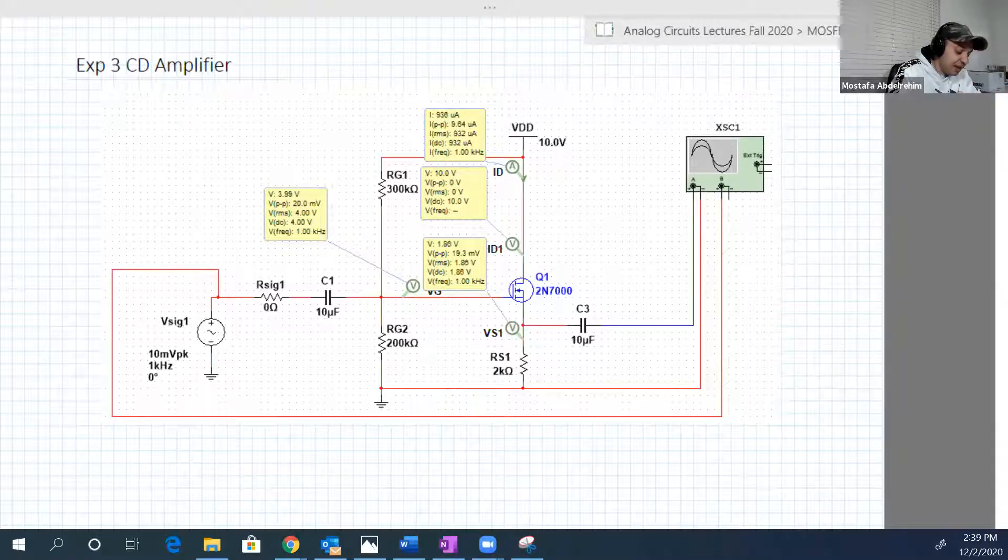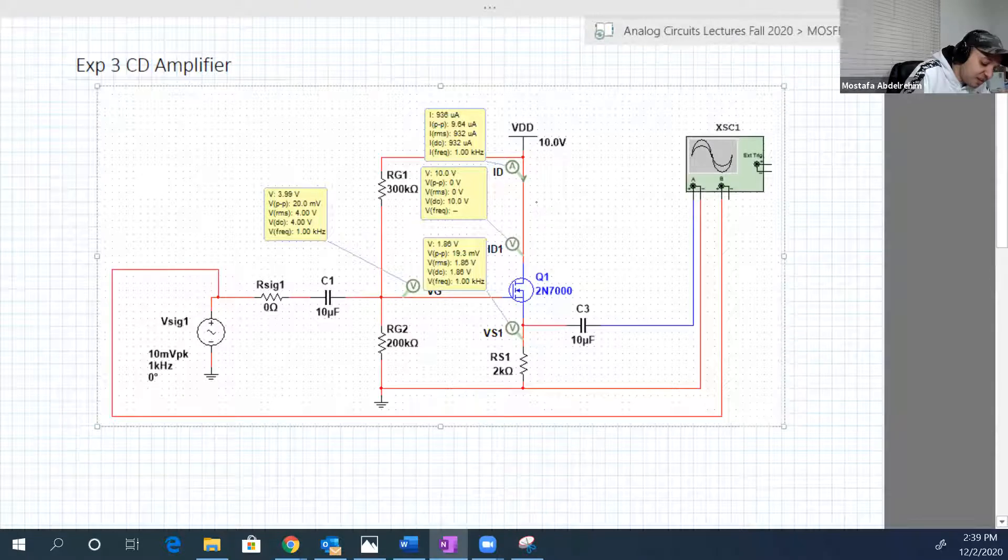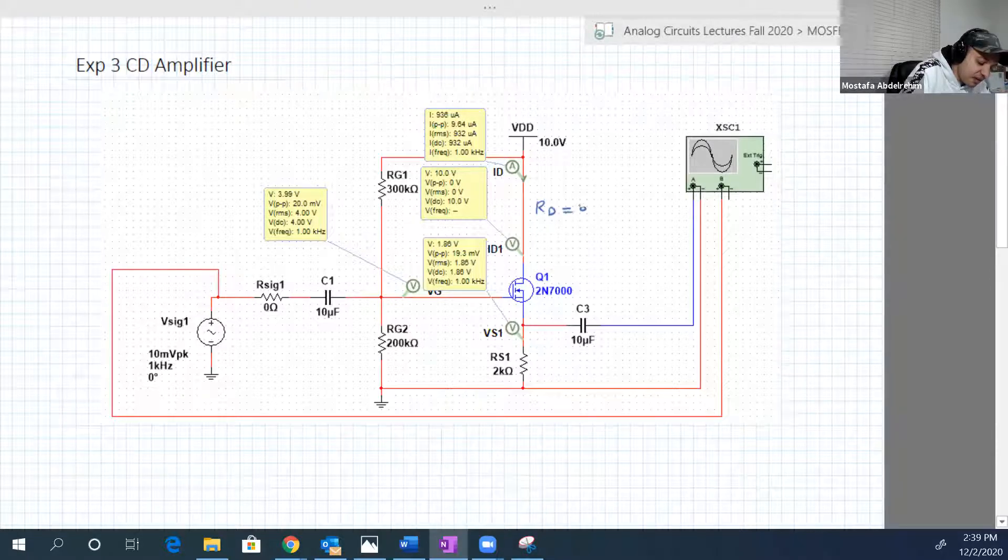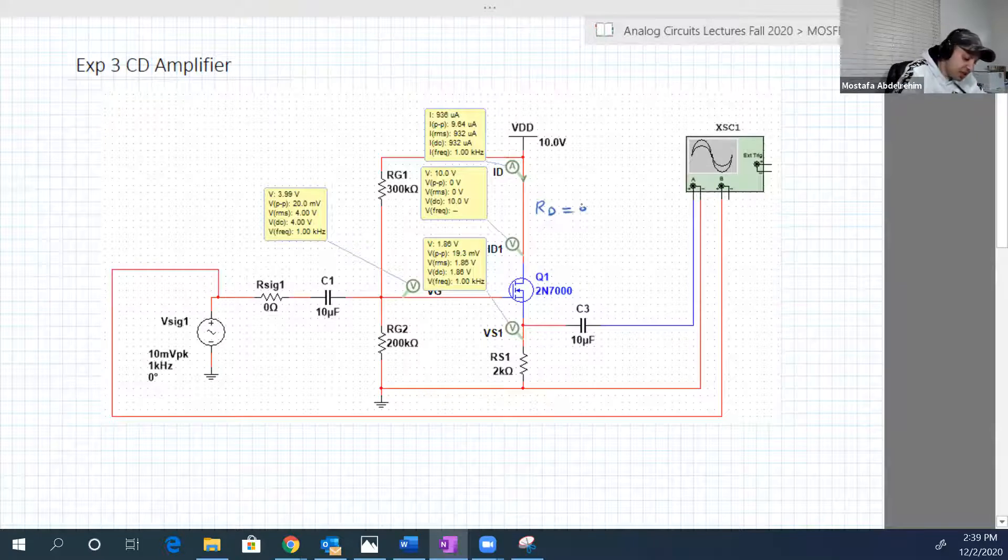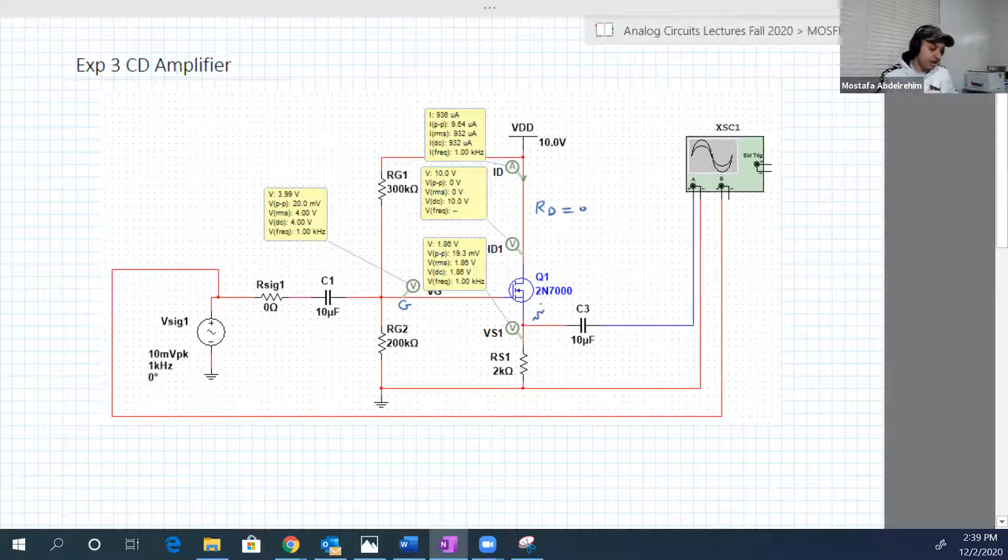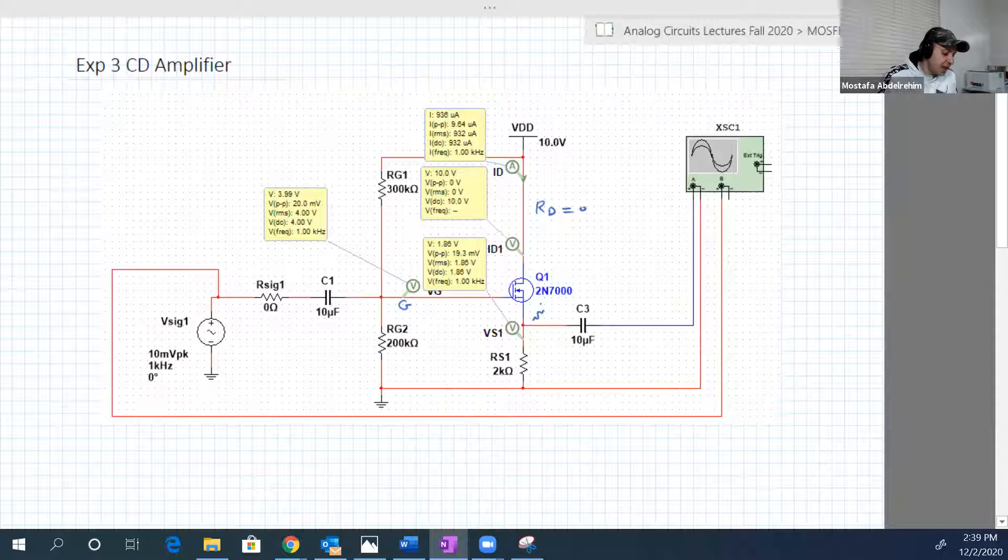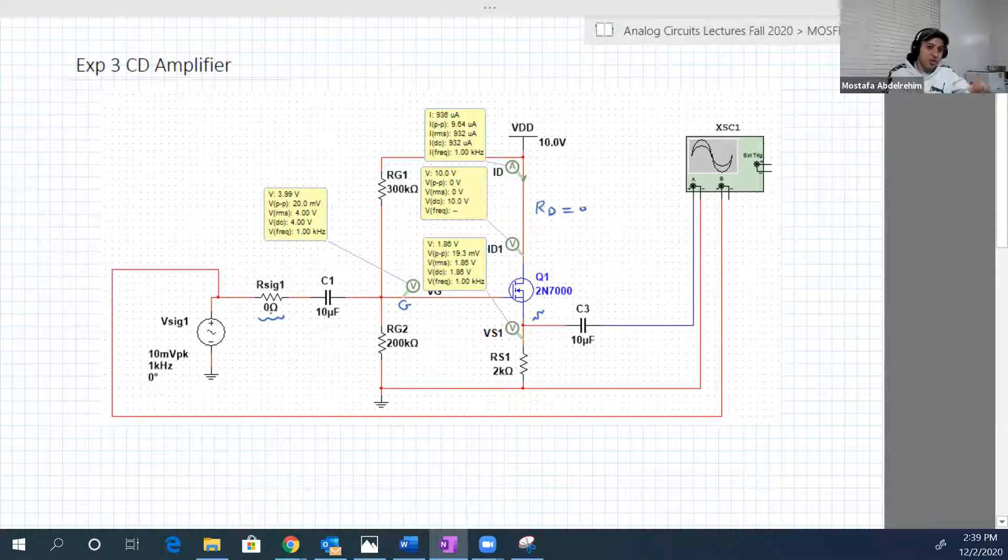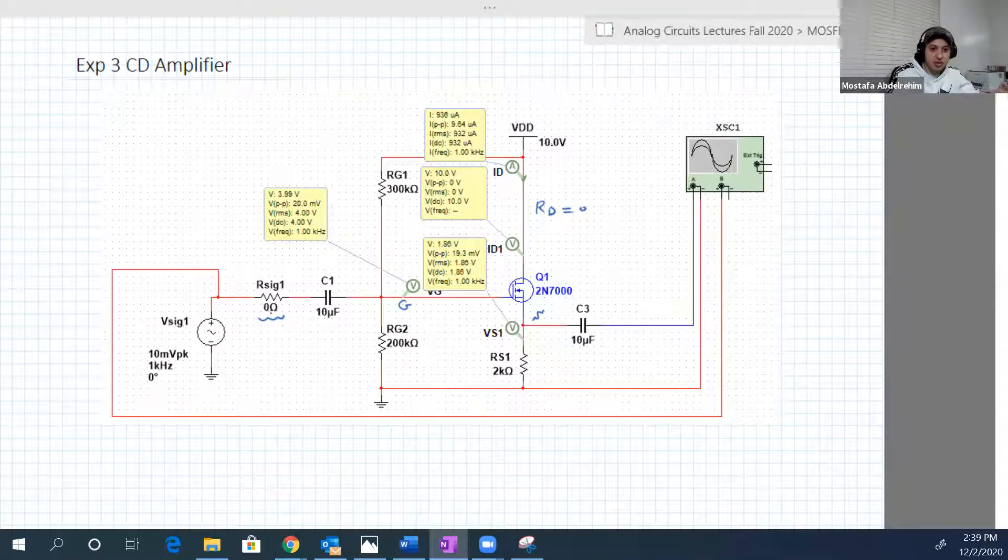Except that there is no RD, so RD here is 0. The input is at the gate, the output is at the source. And I also changed our signal to 0. I just want to see the effect of having the output of the source without any other effect of our signal.